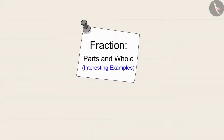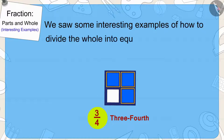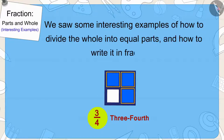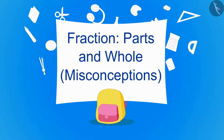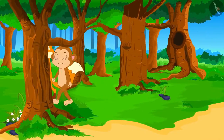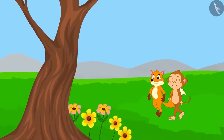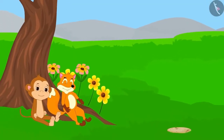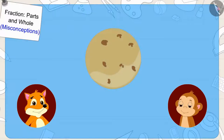Hello, children. In the previous video we saw some interesting examples of how to divide the whole into equal parts and write it in fractions. In this video, we will learn about some misconceptions related to it. One day, Babban and the fox got lost in the forest. They had wandered a lot but could not find anything to eat. Both got tired and sat in the shade of a tree. Just then, they found a chapati there and both of them decided to divide the chapati into two halves.